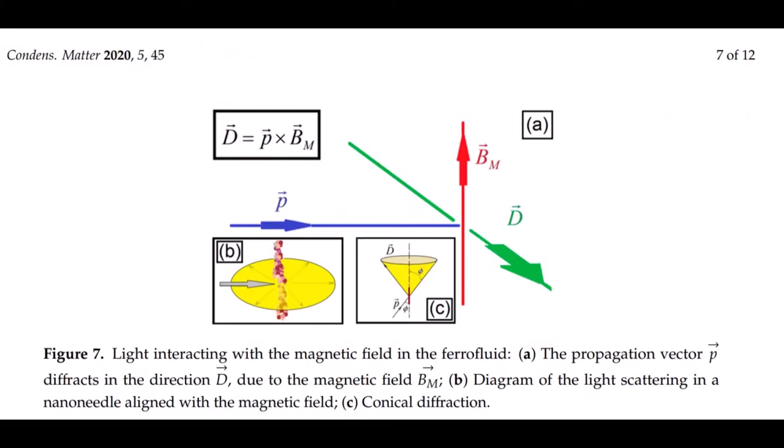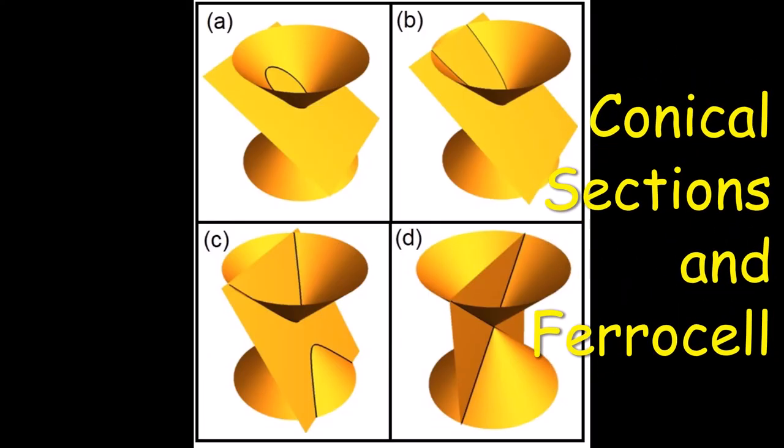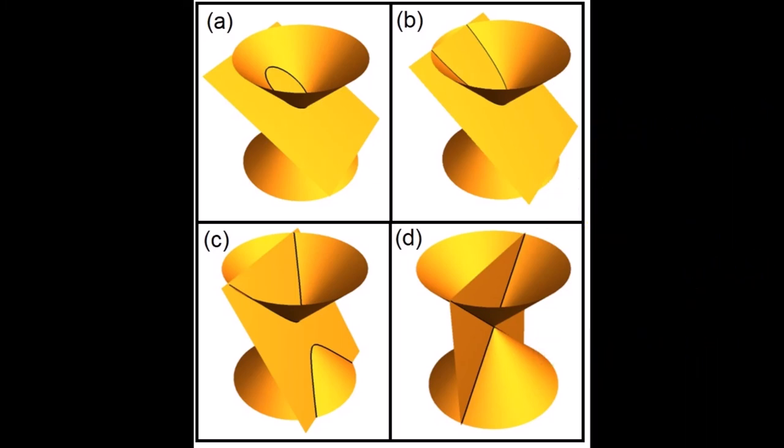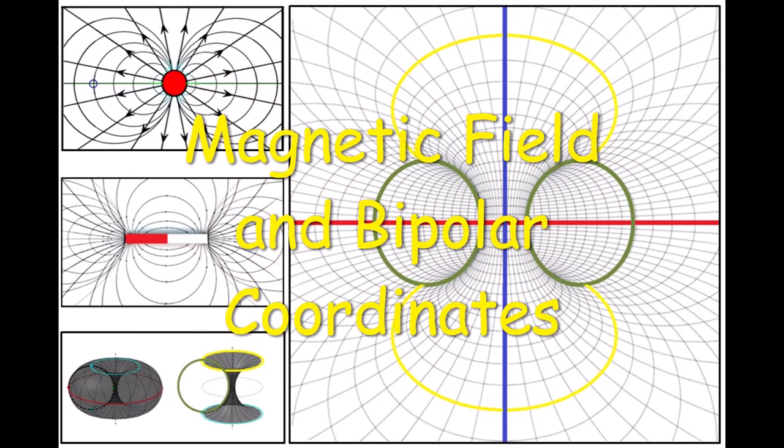Details of the diffraction of light by the needles formed in ferrocells by the magnetic field applied by the magnet. Conical sections and the ferrocells by the magnetic field and bipolar coordinate.